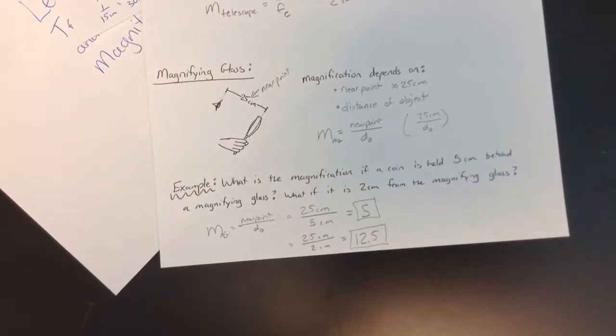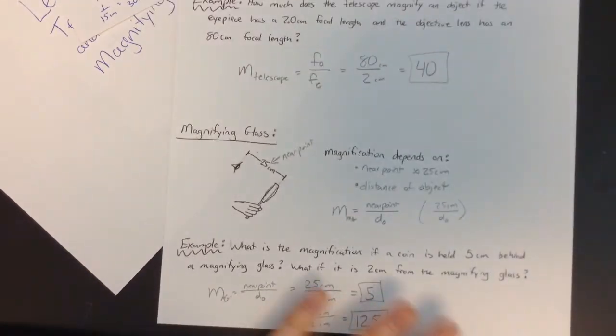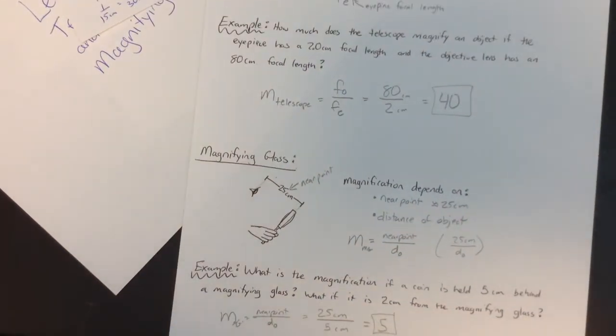Right, so I think that's examples of all the things you're going to need to be able to do on the practice problems here. So we've got telescopes and magnifying glasses and lenses. Alright, well, thanks for watching. Let me know if you have questions.